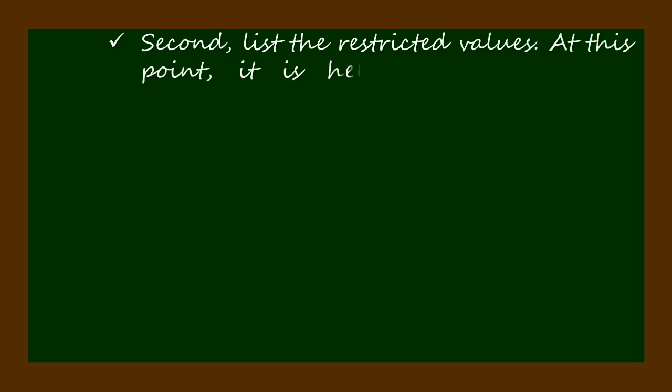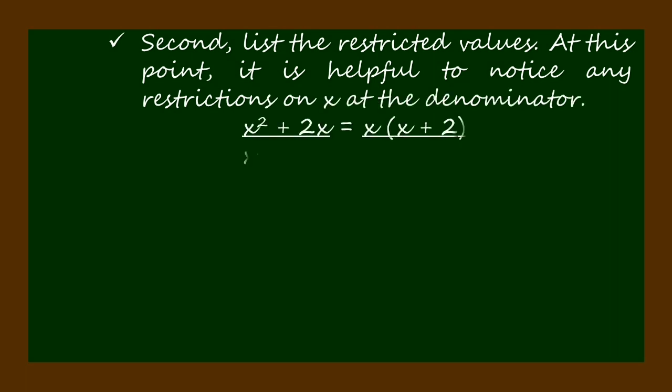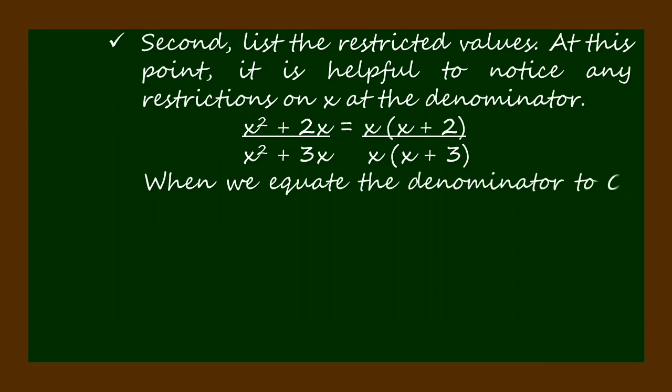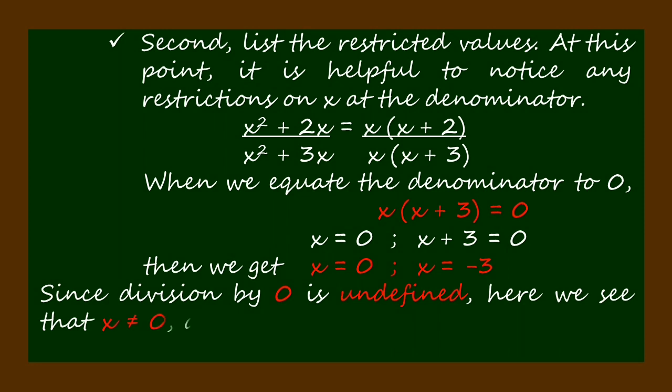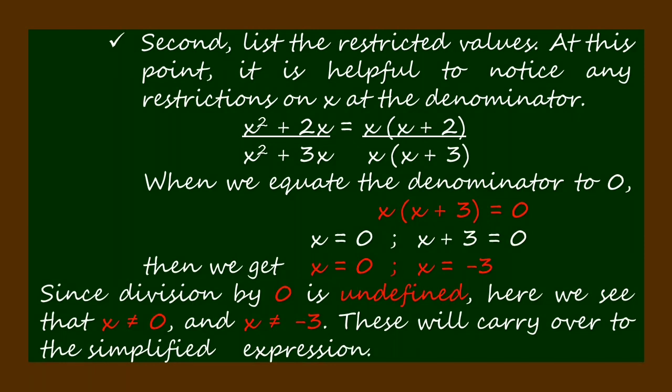Second, list the restricted values. At this point it is helpful to notice any restrictions on x at the denominator. When we equate the denominator to zero, then we get x = 0 and x = -3. Since division by zero is undefined, here we see that x ≠ 0 and x ≠ -3. These will carry over to the simplified expression.